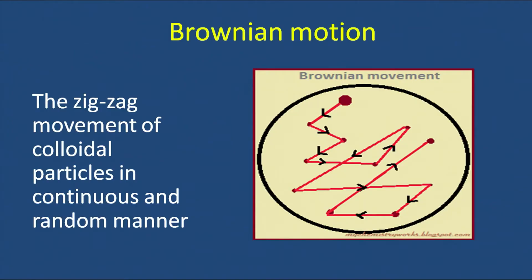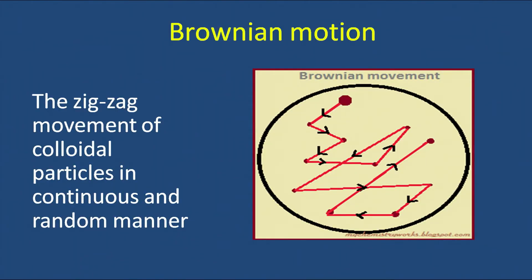The second important property is Brownian motion — the zigzag movement of colloidal particles in a continuous and random manner. Colloidal particles are continuously hit by molecules of the dispersion medium, but the number of molecules hitting the particle is not equal on all sides. This imbalance produces a net force that makes the particle move in a particular direction; shortly afterwards the position changes, a new set of molecules strikes the particle, the net force shifts direction, and this results in continuous zigzag motion.